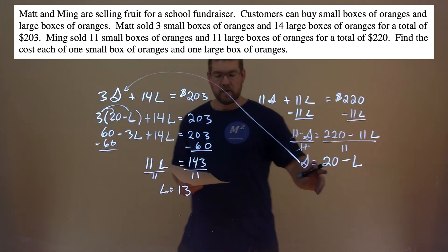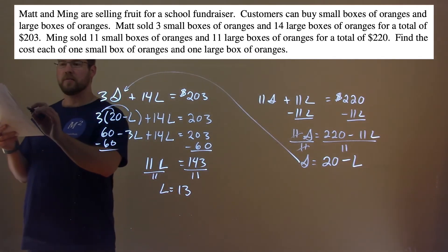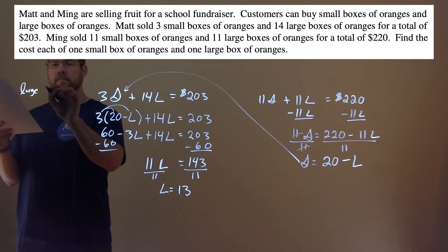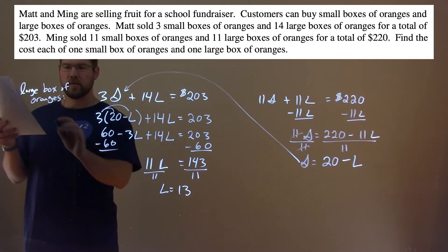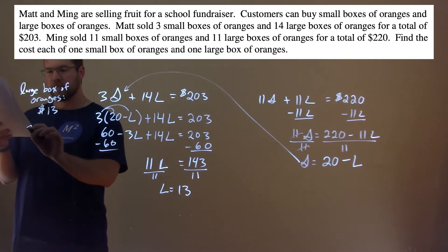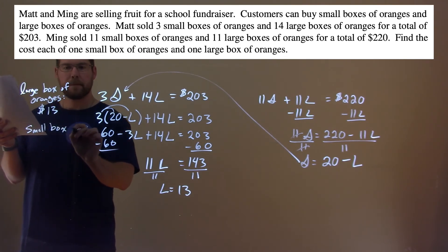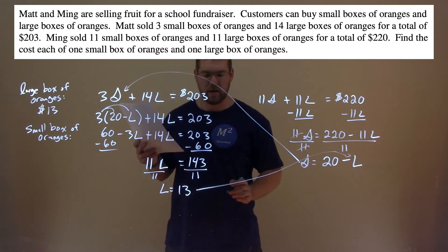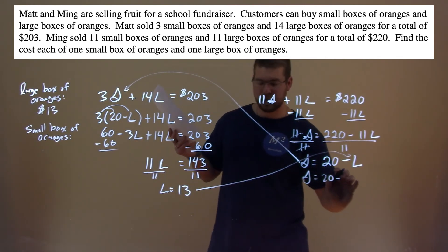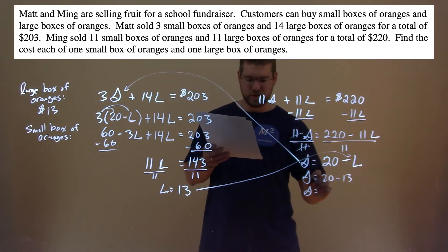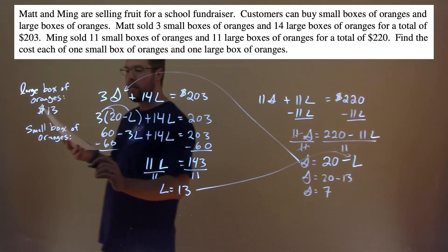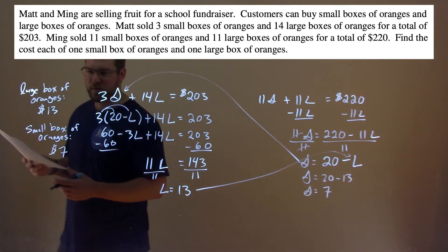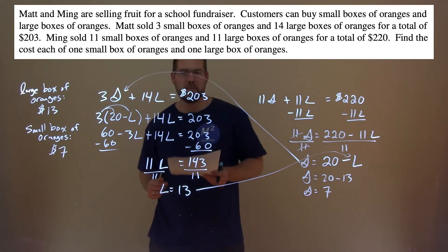Now we have this other equation. L, the large box of oranges, is $13. The small box of oranges we'll find. We take this L and we're going to plug it in for that L right there. So S equals 20 minus 13, and S equals 20 minus 13, which is 7. So the small box of oranges costs $7, and now we know the cost of the large box of oranges and the small boxes of oranges.